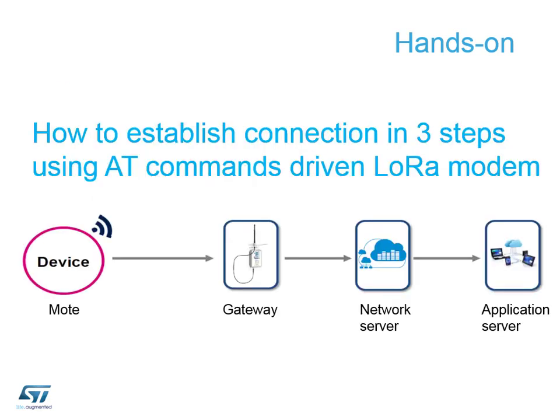This is what we need for a LoRa network. In front of you on your desk you have your device, which is called a mote in LoRa terms — this is our discovery board containing the STM32 microcontroller. This device is then going to talk to our gateway. The gateway is just a pipe or conduit or channel which converts the RF signals from our device into something the network server can understand.